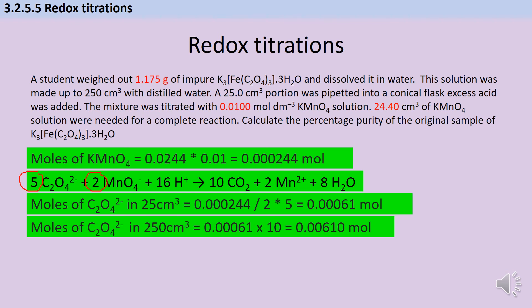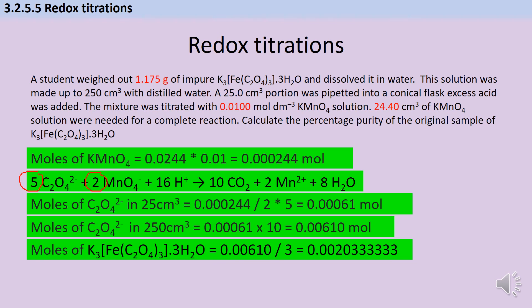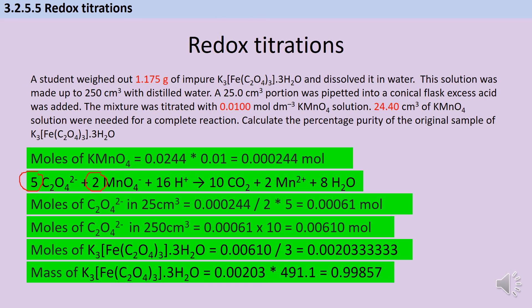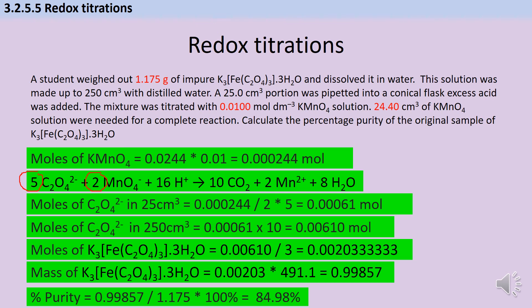Multiply the moles in 25 cm³ by 10 to get the moles in the whole 250 cm³ solution. Then, since each mole of potassium ferrioxalate contains three moles of ethanedioate ions, divide by 3 to get moles of the compound. Calculate the Mr of potassium ferrioxalate (491.1), multiply by moles to get mass = 0.99857 g. Percentage purity = 0.99857 ÷ 1.175 × 100. Round to three significant figures (the smallest in the question): 85.0%.